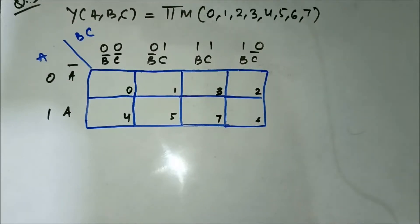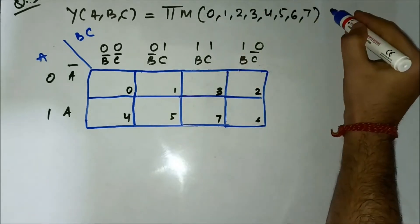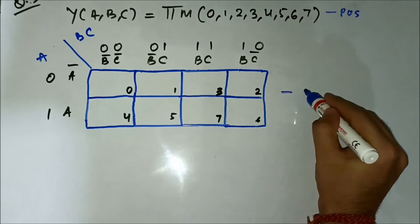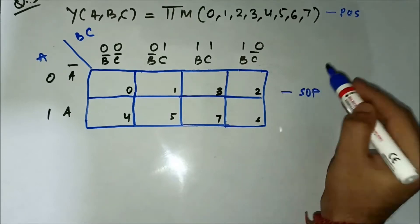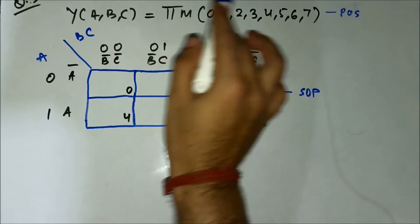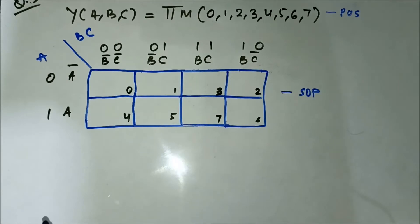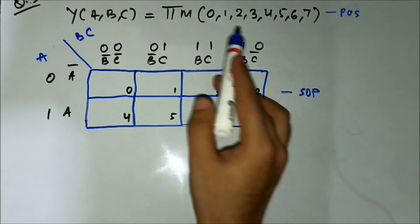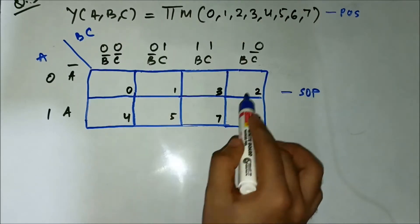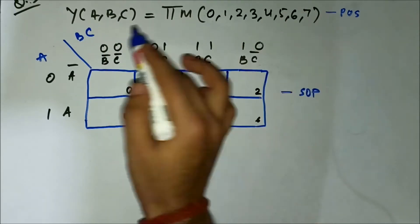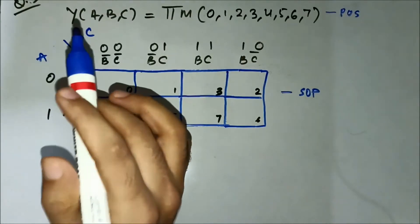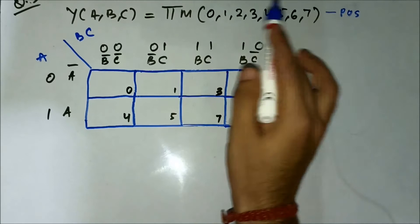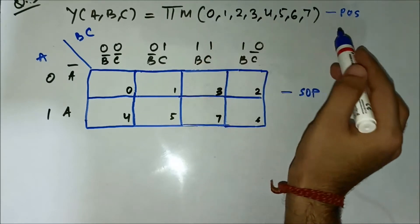This is the third question related to mapping of POS expression in SOP KMAP. The Boolean expression is given in terms of the max term values. It's a very interesting one because all the max term values are included. For a three-variable KMAP, how many number of terms can there be? All of them are there, from 0 to 7.